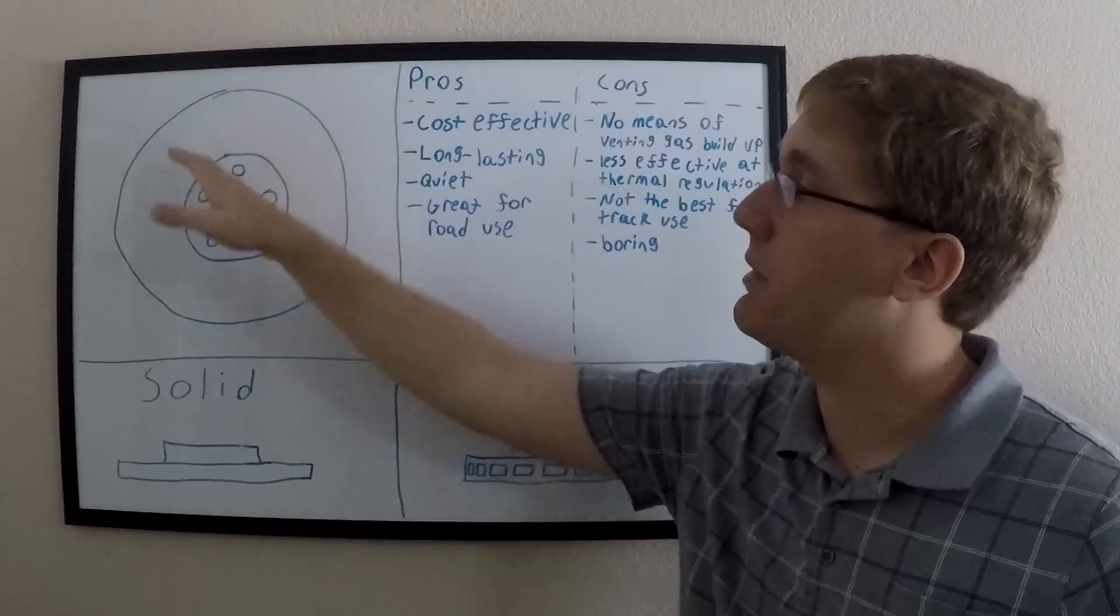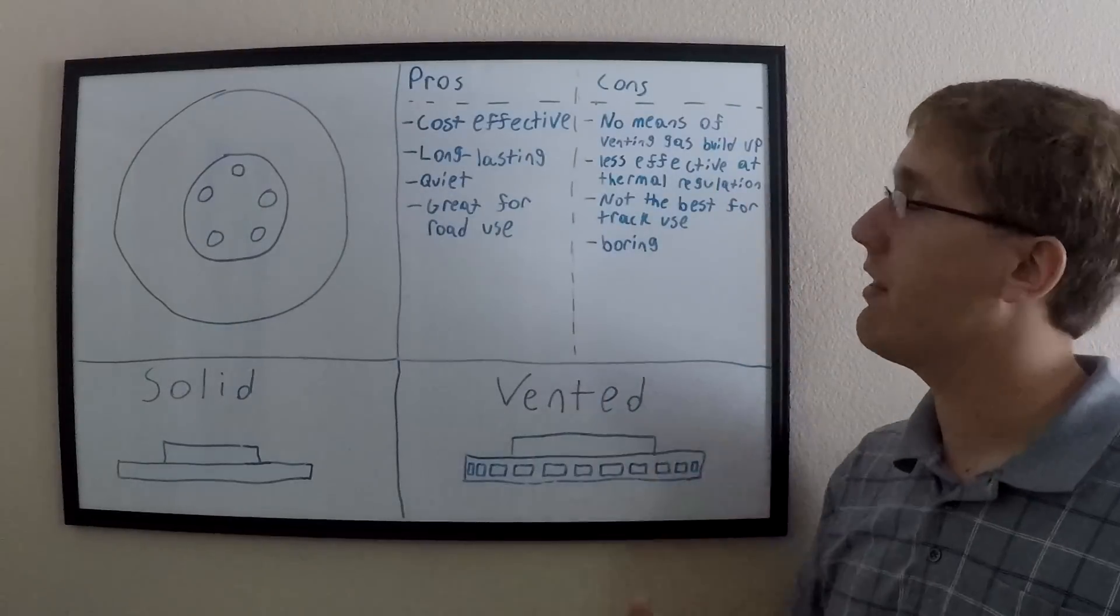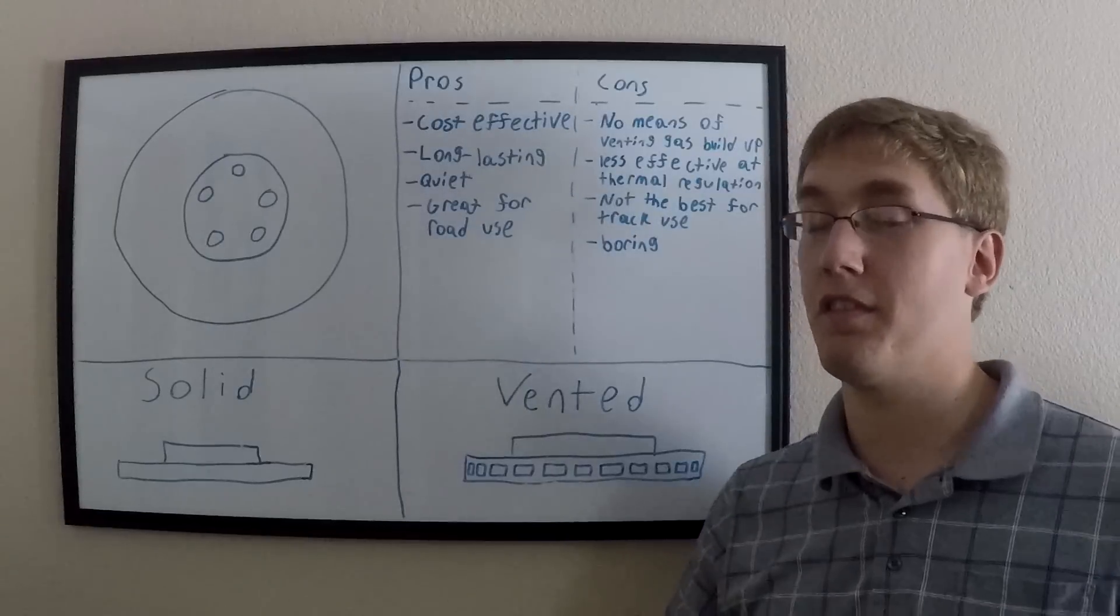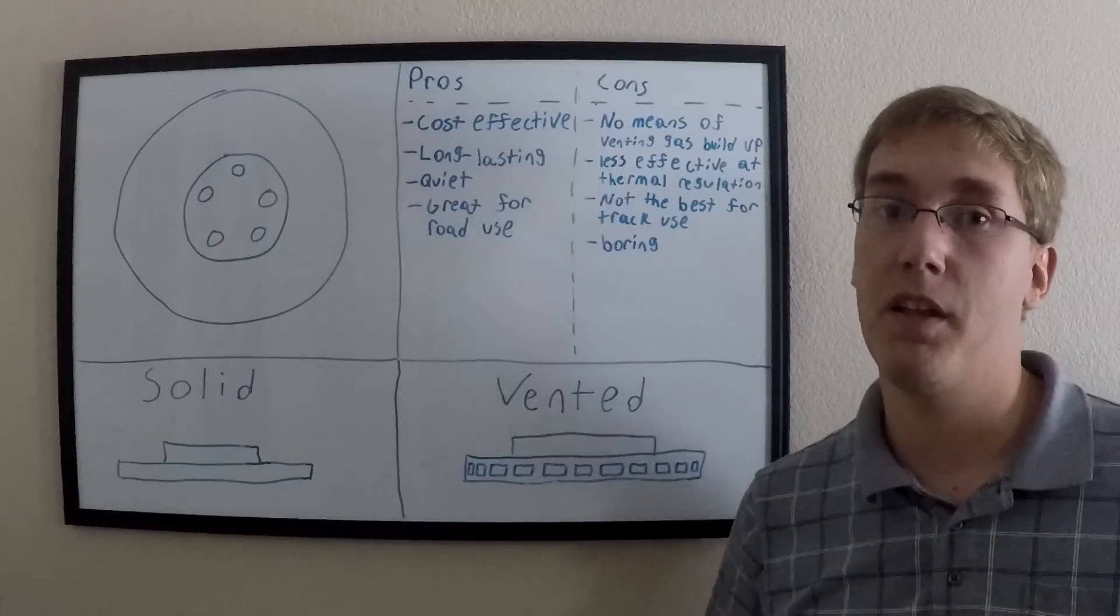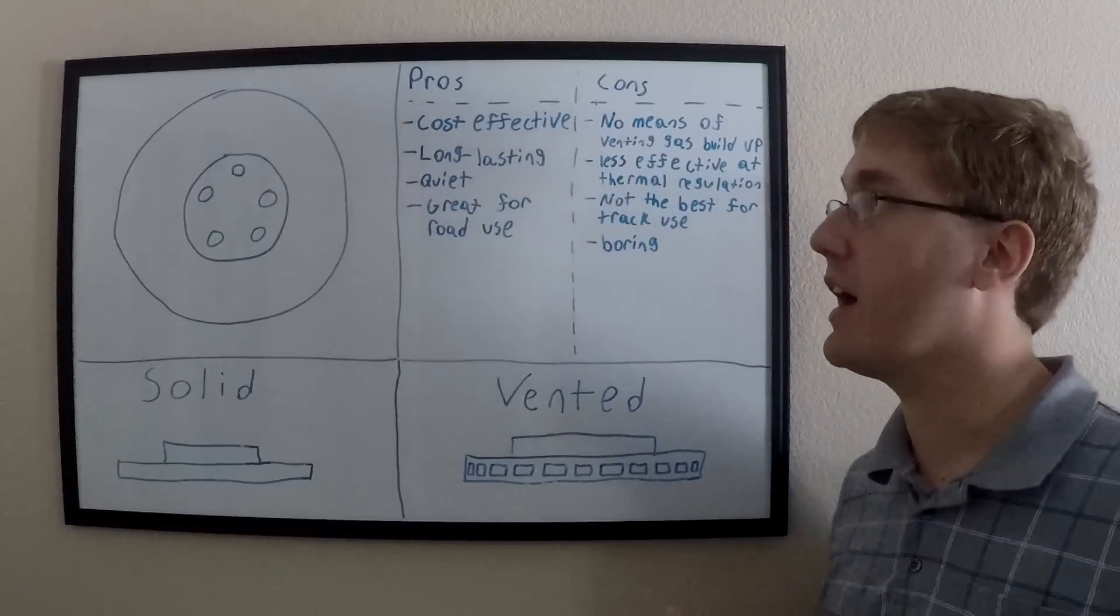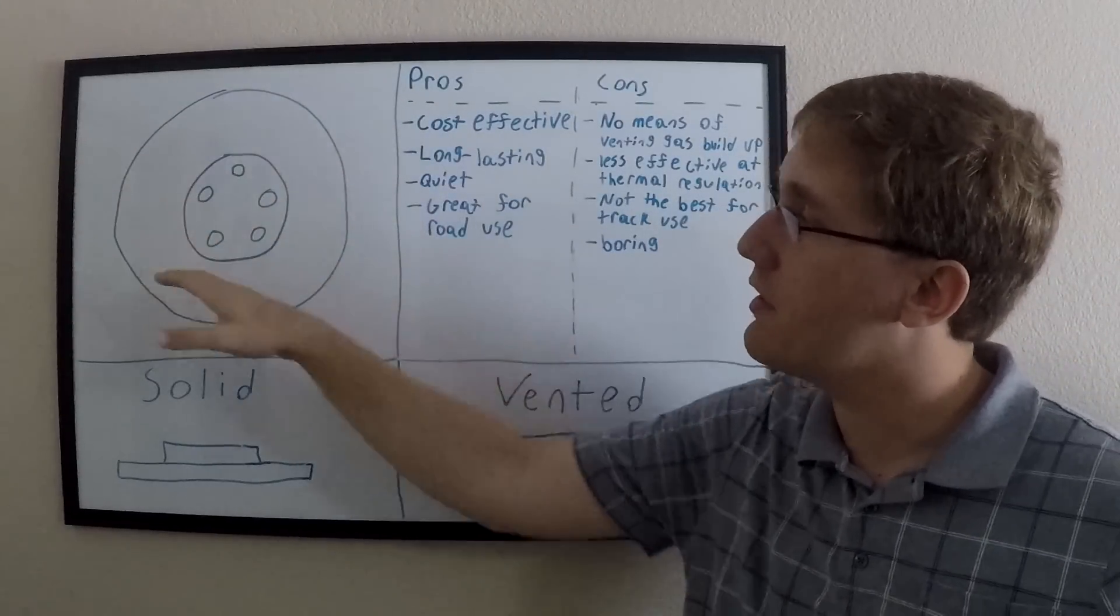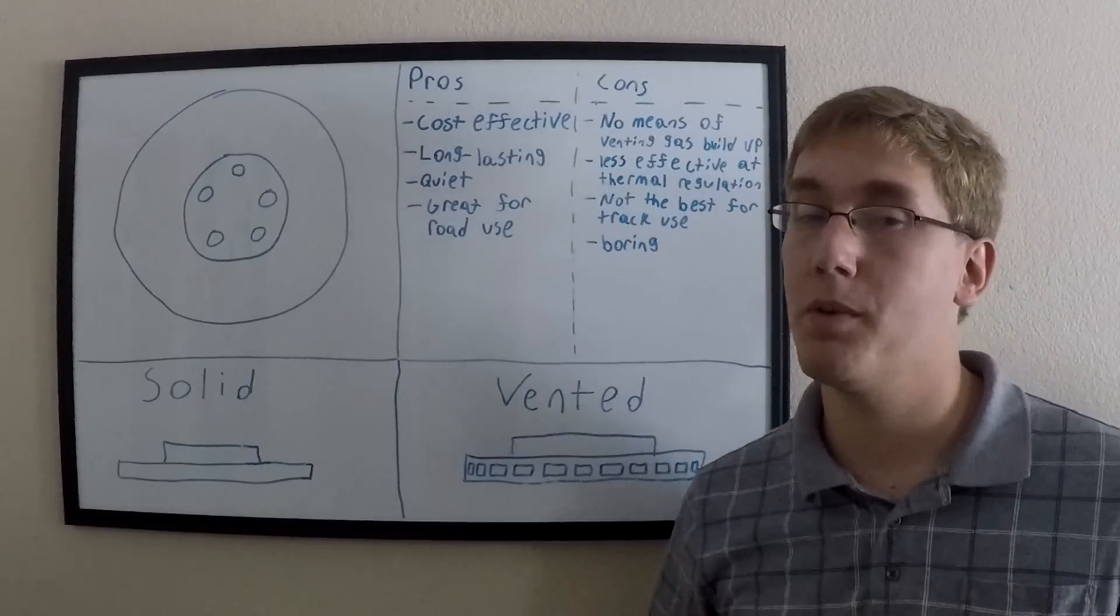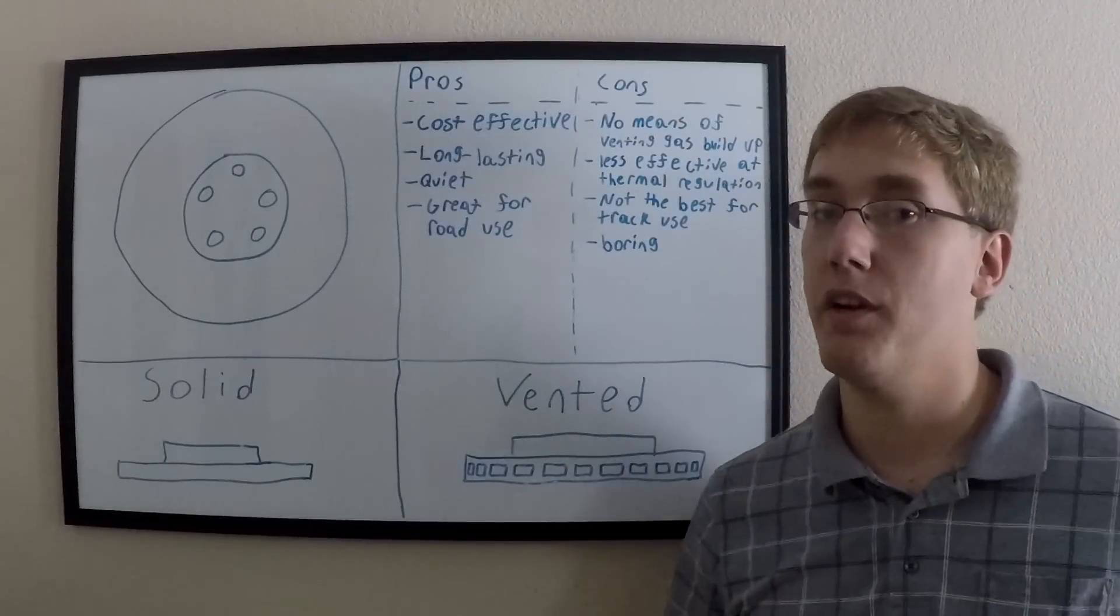The only downside to plain rotors like this with no real patterns etched into them is the fact that they have no way to be able to vent gases that build up under heavy braking when you're, for instance, at the track. This really isn't as much of an issue today as it was back in the days of asbestos pads. They're also not as effective at thermal regulation. The plain face here means you don't have as much surface area and ways to be able to regulate the temperature, and this means that they're not as great for track use.